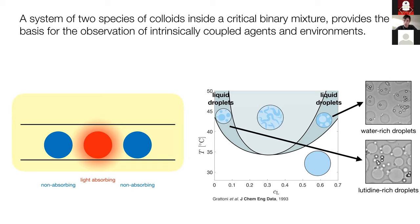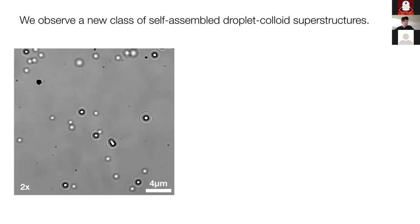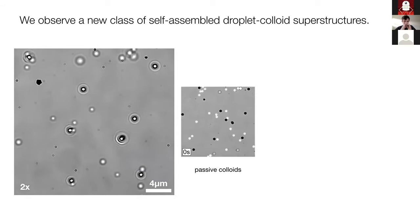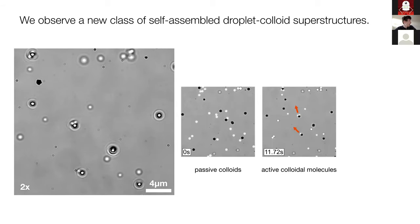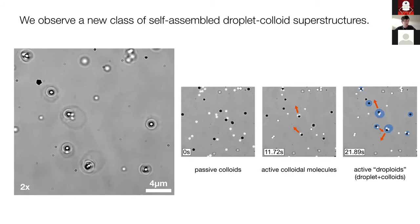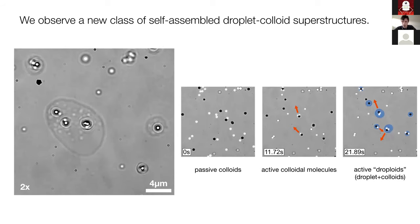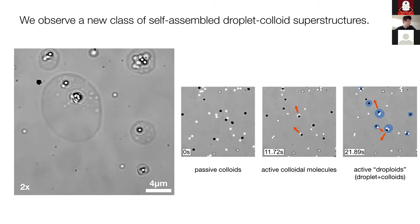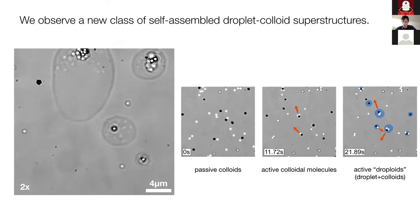Now I'll show you the experiment step by step. We have a binary mixture of passive colloids — light-absorbing (dark) ones and non-absorbing (light) ones. When the video starts, the light is switched on. You can see these particles come together, form colloidal molecules, and at the end droplets appear around them. These are quite active — the colloidal molecules move and that moves the droplet as well. This is the new type of structure we observe.